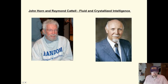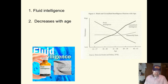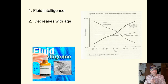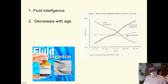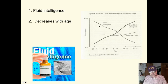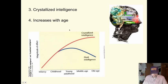Horn and Cattell's theory of fluid and crystallized intelligence: fluid intelligence, somewhat related to G, is your general processing ability. They found that fluid intelligence — the ability to process information — decreases with age, as our brains function less efficiently and effectively. But before you get into a state of despair, there is an upside to that.